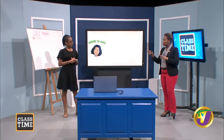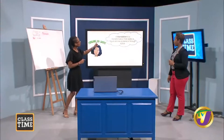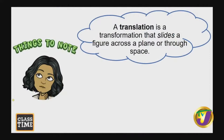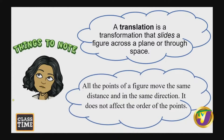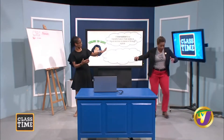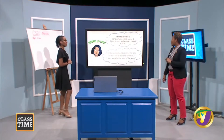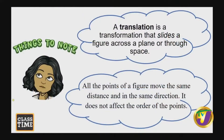All of those things we've looked at so far — we could describe that change in location. But there are some things to note when looking at translation. A translation is a transformation that slides a figure across a plane or through space. The smiley face slid to the right, the van drove across, the shoe slid — and when we did that initial activity, we were translating as well.